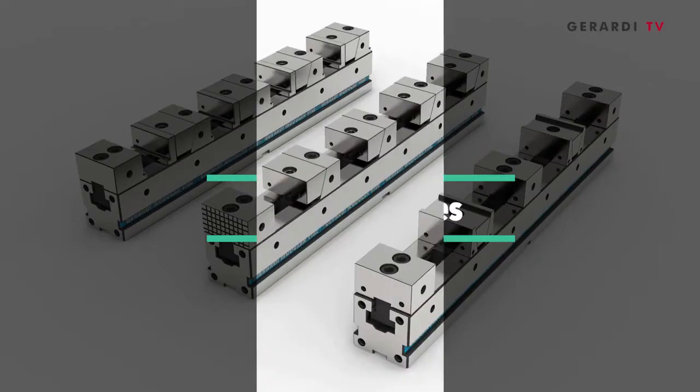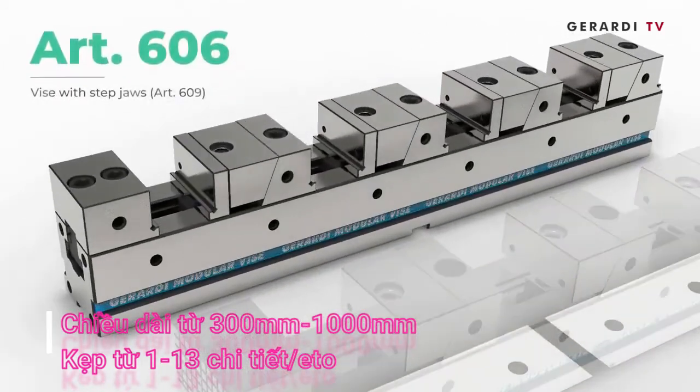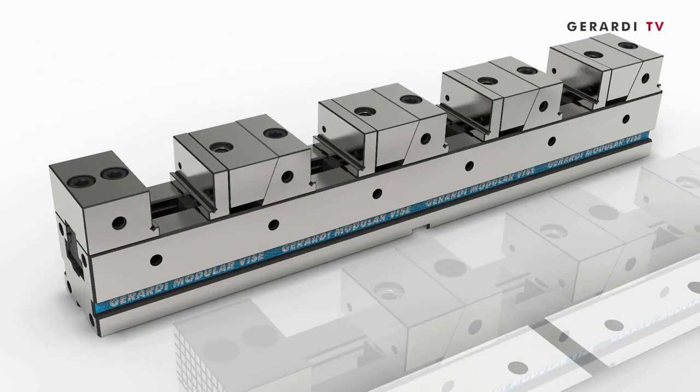A quick introduction of the multi-flex vise range. The three main multi-flex vise models are Article 606 with step jaws, to raise workpieces for drill-through holes.